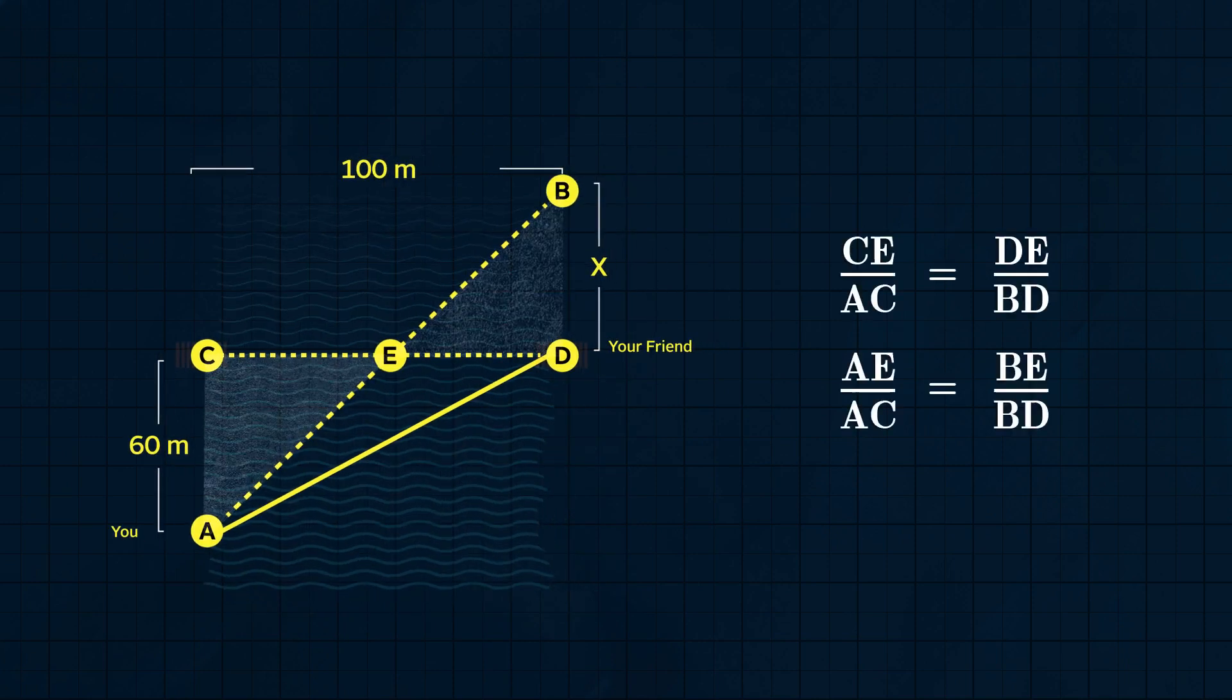So in particular, CE over AC equals DE over BD, and AE over AC equals BE over BD.